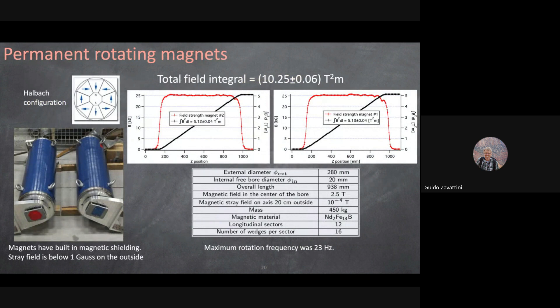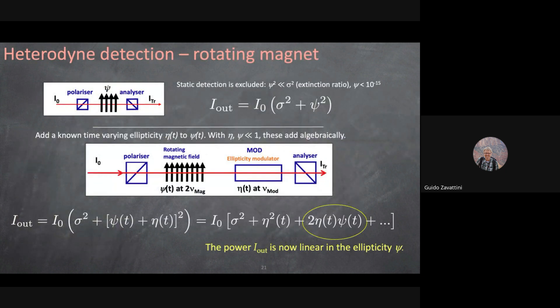The Halbach magnets can be rotated — we reached 23 Hz, though each weighs half a ton, which is quite impressive. We slowed down due to mechanical resonances. That was our magnet choice: permanent magnets at 2.5 tesla. To extract the ellipticity induced by the magnetic field, if you have two crossed polarizers with ellipticity equal to zero, there's always a little light coming through due to the extinction ratio — down to 10⁻⁷ for good calcite crystal polarizers.